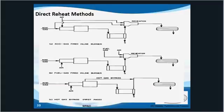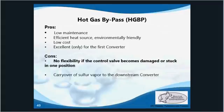Indirect fired is the better way to go, but first the hot gas bypass is also a direct heating method where a portion of the furnace outlet goes straight into the first converter. Hot gas bypasses are only used for the first stage since sulfur vapor added from the bypass decreases the full potential of the Klaus reaction. They are very low maintenance, easy to install, and low cost, but a big con is you have no flexibility when the control valve gets damaged or stuck.